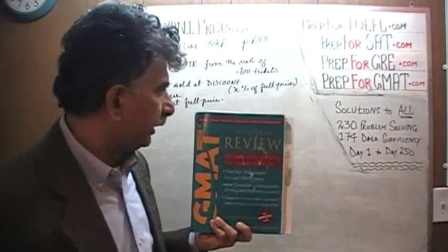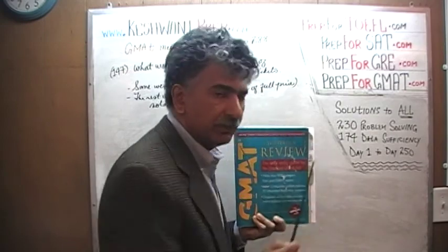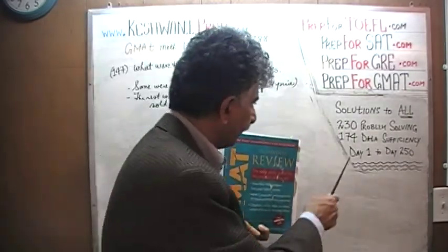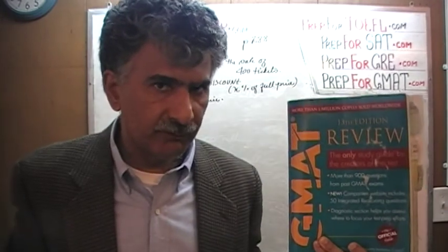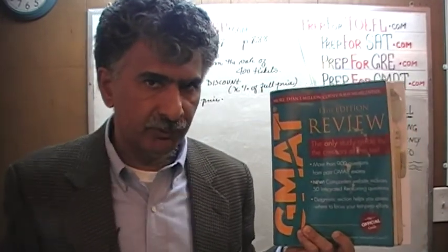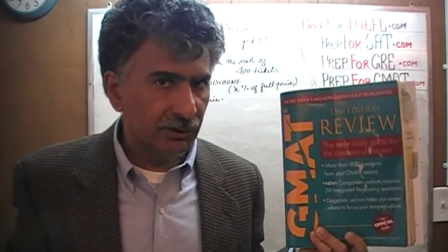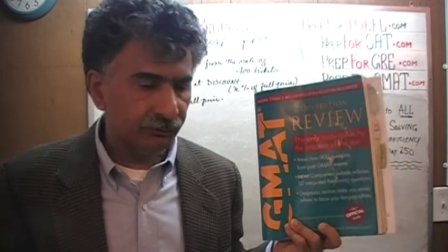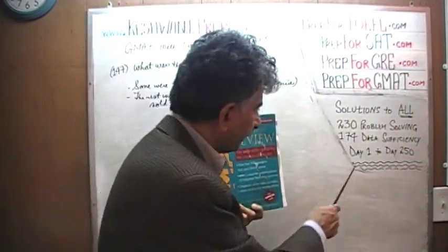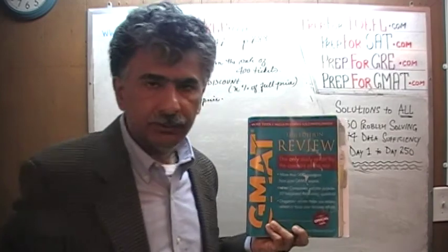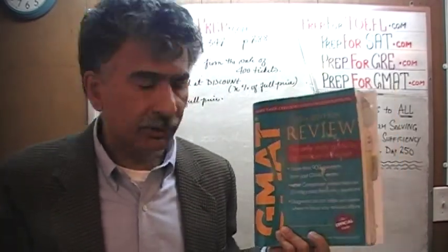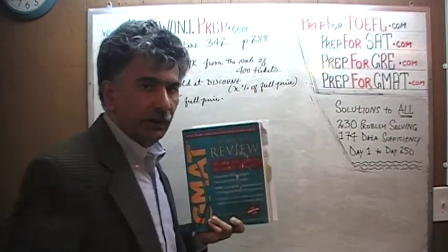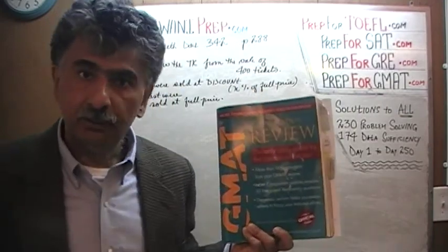The book contains 230 problem solving questions. It has 174 data sufficiency questions. We have already solved every single math problem from this book. If you are interested in watching the original solutions to the problems, you will find the original solutions from day number 1 through to 50. Right now we are in the process of redoing the problems and we are on page number 288.